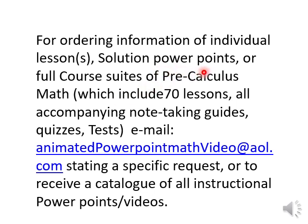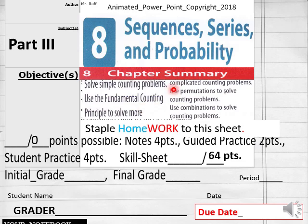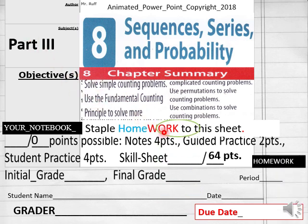Hello everybody, get ready to do Lesson 8, Chapter 8 Review and Summary, Part 3 homework for Pre-Calculus Math today. Part 3 of our homework has 64 points on your homework sheet. Name, date, period, onliners, homeschoolers put your due date there.